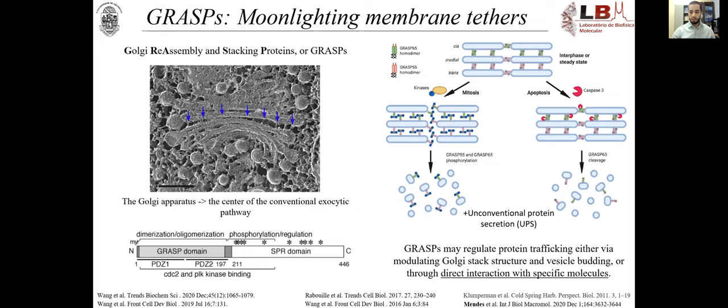Grasps basically regulate protein trafficking either via modulating Golgi stack structure and vesicle body, but also through direct interaction with specific molecules. Grasps can recruit and attach several different proteins during its functionalities. Its structure is divided into main regions, an N-terminus half that we call the Grasp domain. It's highly conserved, myristoylated in the N-terminus, and formed by two PDZ domains connected in tandem. And there is also this C-terminal region that's fully disordered, rich in serine and proline residues.